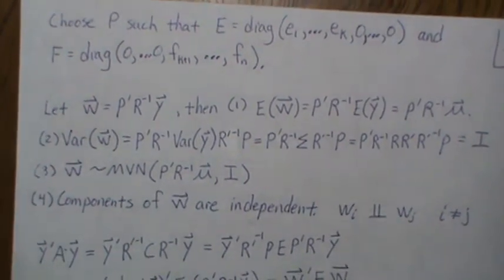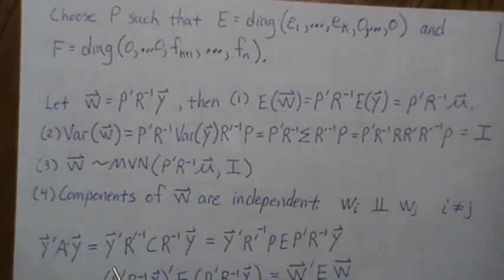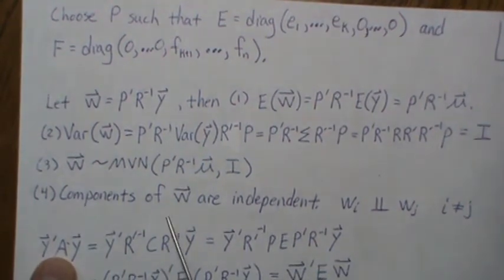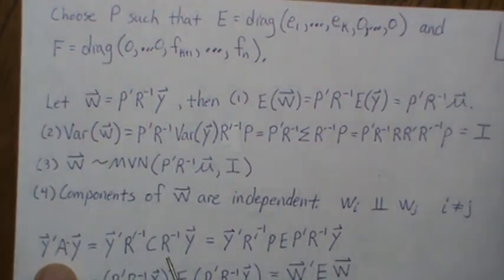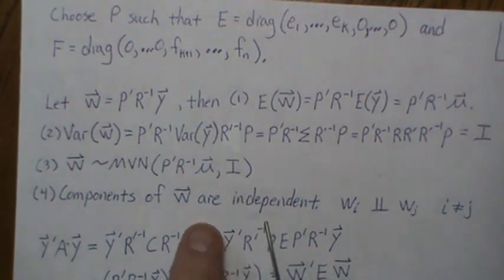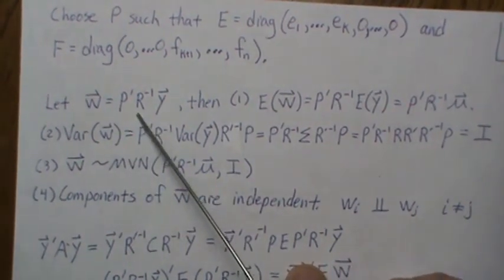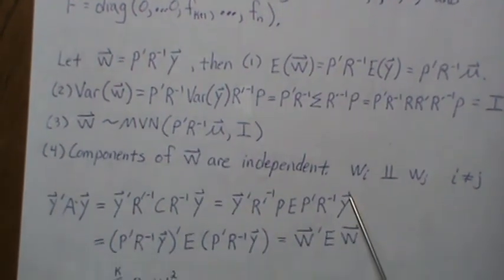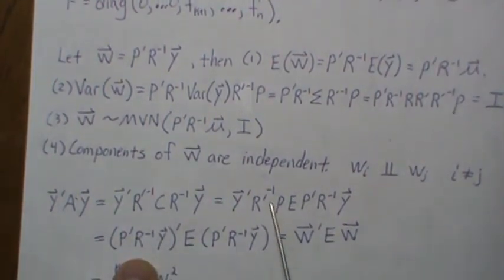Now let's look at the quadratic forms. So Y' A Y, we plug in what we know about A. We called it R'^(-1) C R^(-1). Then C was PEP'. But then if we look at this piece right here, P' R^(-1) Y, that's what we were defining as W. So this piece, if we bracket it, that makes it easier to see. Then we bracket this, we transpose it. So we untranspose it and we get this, which is this, but remember that E was a diagonal matrix.